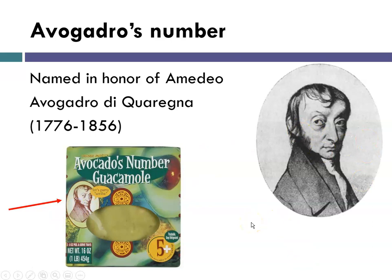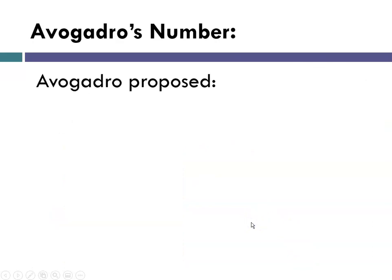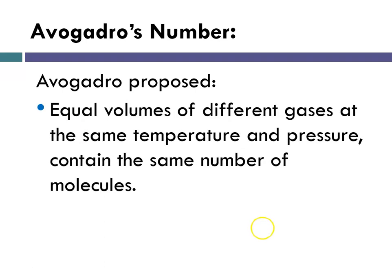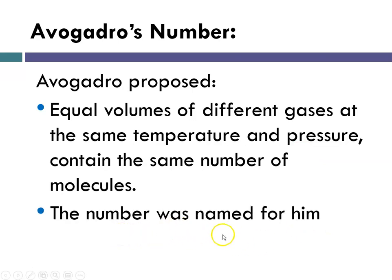So why is it named after Avogadro? Well, it turns out that Avogadro did a lot of experiments with gases. And he proposed that if you have equal volumes of different gases, as long as they're at the same temperature and pressure, they contain the same number of molecules or atoms. And again, the number was named for him. He did not calculate it. It was many years until that happened. But the number was named in honor of him because of something called Avogadro's law. And that is what this is right here. Avogadro's law states that equal volumes of gases at the same temperature and pressure contain the same number of particles.